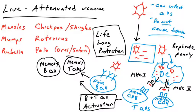That immune response typically also generates memory cells — memory B cells and memory T cells that contain either the B cell receptor/immunoglobulin that remembers this pathogen, or T cells with T cell receptors that recognize peptides from this antigen. So if you're ever exposed to measles, mumps, polio, or rotavirus later in life, you already have B cells and T cells that recognize that pathogen. Memory B cells can rapidly turn into plasma cells producing neutralizing antibodies, while memory CD8 T cells destroy infected cells and CD4 memory T cells induce inflammation. These live attenuated vaccines give you very robust, typically lifelong immunity.